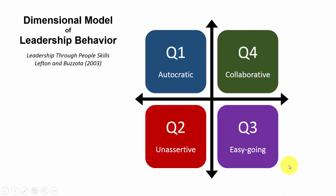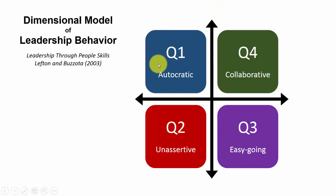I've created this SmartArt. The biggest problem with having this slide all come up at once is it's a lot of work for the presenter. The presenter needs to explain the horizontal dimension, the vertical dimension, and then explain each of these leaders in order: Q1, Q2, Q3, Q4. That's a lot of information for the presenter to remember.